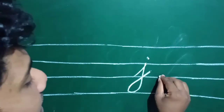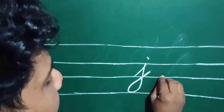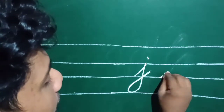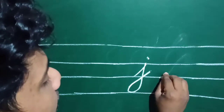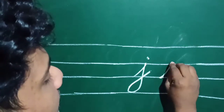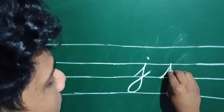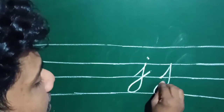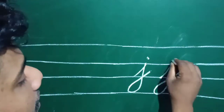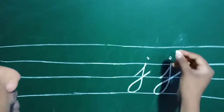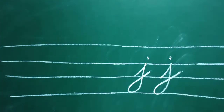Once again, third line — 1, 2, 3, 4. Like this. Yes, this is small letter J.